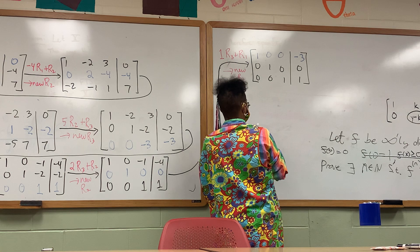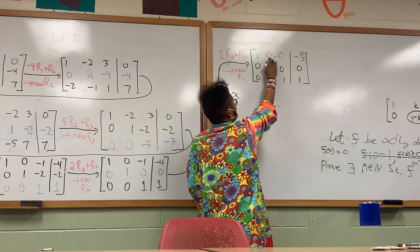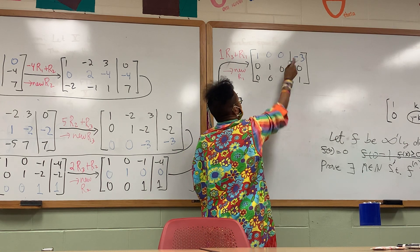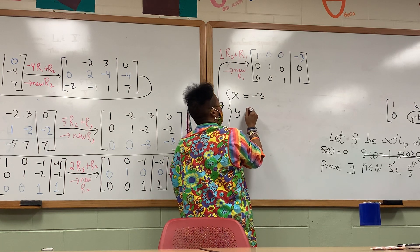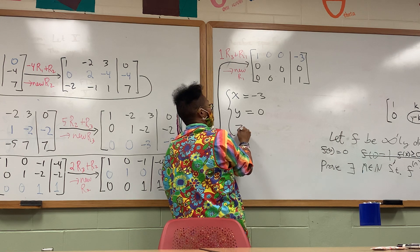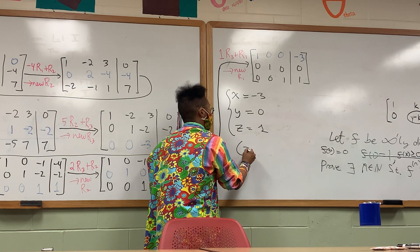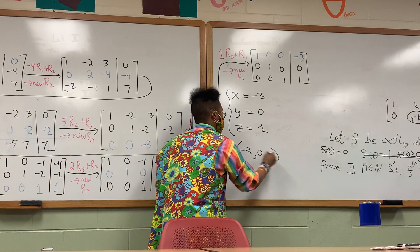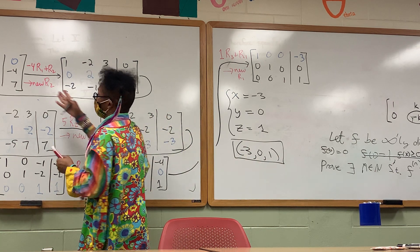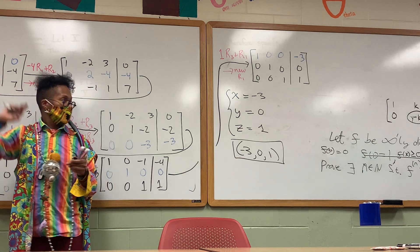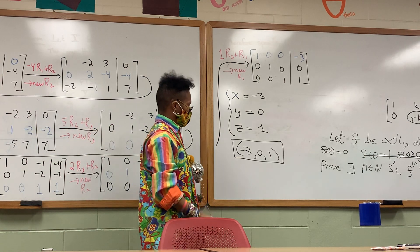We're done. We translate this back to math. In math speak, this means x plus zero y plus zero z equals negative three, y equals zero, and z equals one. So the answer is negative three, zero, one — that coordinate is where the three planes meet. This is our final answer — that's where the planes meet.